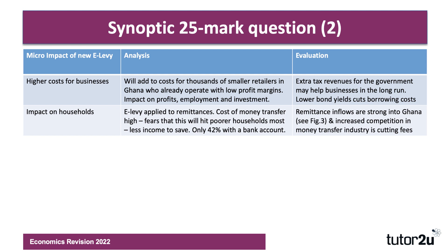Equally, the extra tax revenue — the Ghanaian government is trying to raise £70 million from this — may in theory be helpful to some businesses, particularly if it's invested in the economy. And if it helps keep government bond yields down, that itself can often lead to lower borrowing costs for businesses in the long run.